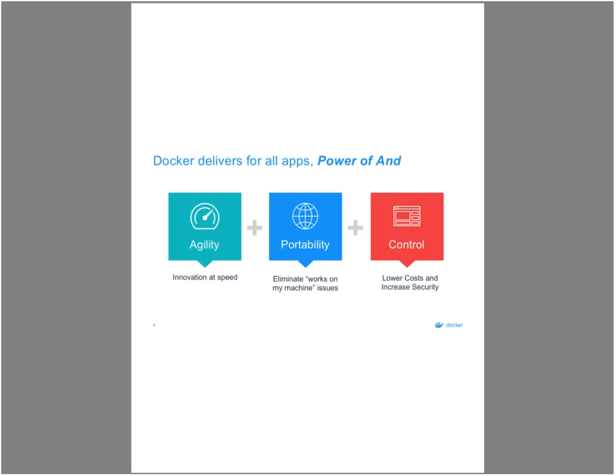Docker uniquely delivers agility, portability, and control for the application environment. These are the cornerstones of how we build our products, because many solutions provide speed and agility but lack operational control, while tools with strong security and control can be cumbersome. We believe it's important to bring all three pillars together, because that's what brings developers and IT operations together to quickly innovate and bring applications to market.